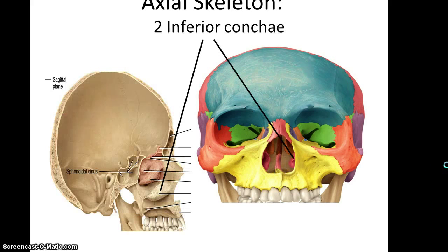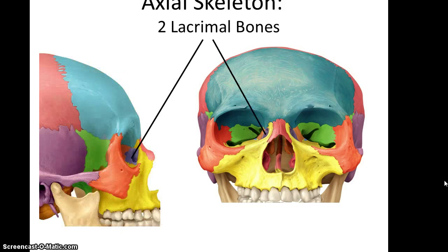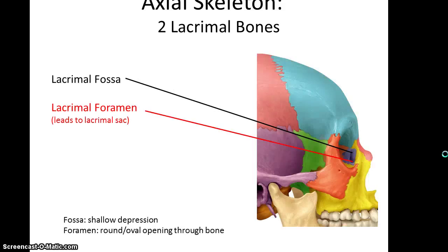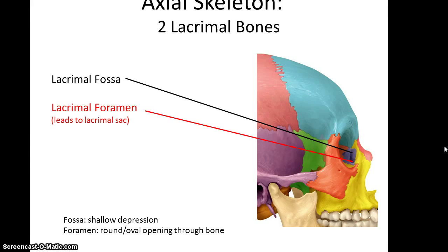You have two inferior nasal concha, one on each lateral wall of the nasal cavity. You have two lacrimal bones that form part of the medial wall of the orbits. The lacrimal bones also have a lacrimal fossa, or depression, that leads to the lacrimal foramen — a hole that leads via a duct down into the nasal cavity. So when you form tears, some of those tears are going to end up in your nasal cavity.